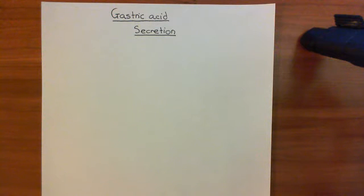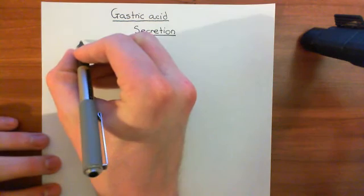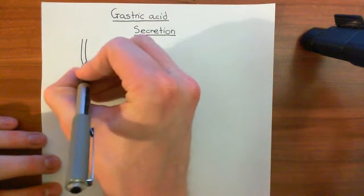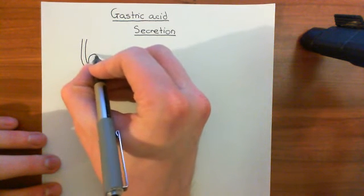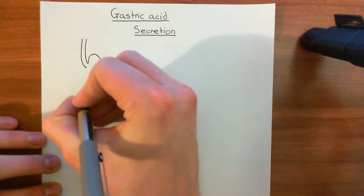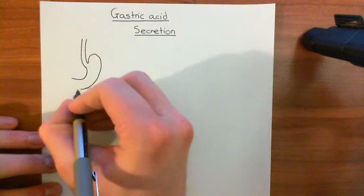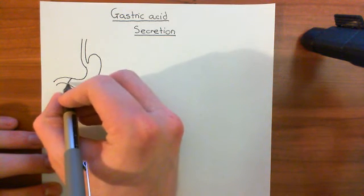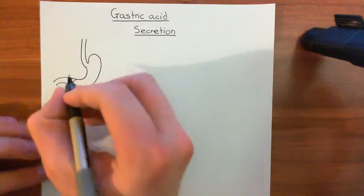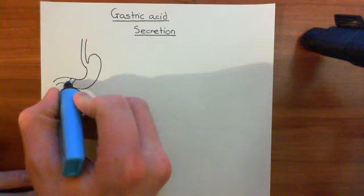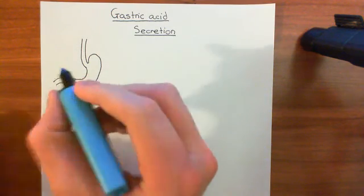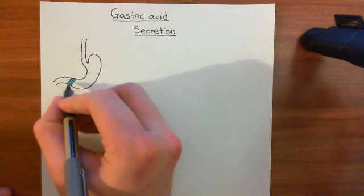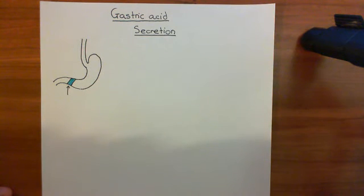Let's start with the anatomy of the stomach. Here's the esophagus coming down, and then it joins with the stomach. The stomach is sort of this shape here, and then it goes into the small intestine. The first portion of the small intestine is the duodenum. Between the stomach and the duodenum, you have a special sphincter called the pyloric sphincter, or just the pylorus — a thickening in the circular smooth muscle surrounding this tube.